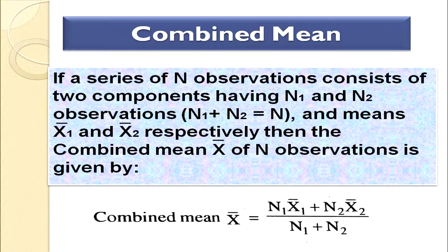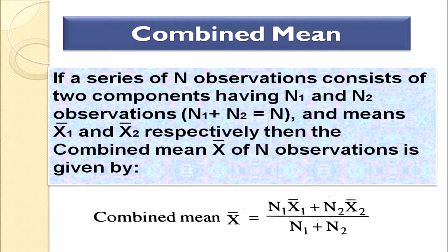So, combined mean. When are we able to compute combined mean? If a series of n observations consists of two components, then we are able to compute combined mean. In this case we have two observations n1, n2, and there will be two means given to us — mean of 1 and mean of 2 respectively. Then the combined mean can be calculated as n1 into mean of first, plus n2 into mean of 2, divided by total number of observations, that is n1 plus n2.